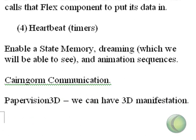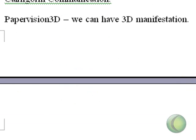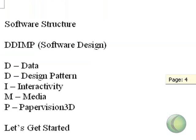Finally, and just really cool, is the heartbeat — basically in terms of timers. That will buy us a state memory, dreaming which we will be able to see, and animation sequences. We will use Cairngorm as the structure to actually send data around the place based upon the heartbeat. And Paper Vision, of course, will give us a 3D manifestation. Isn't that super cool? We've got a lot of cool stuff coming along here.